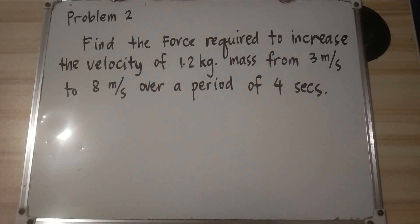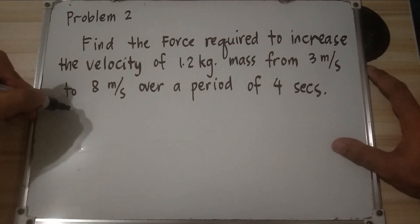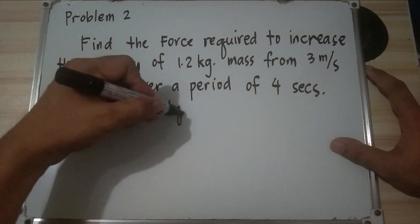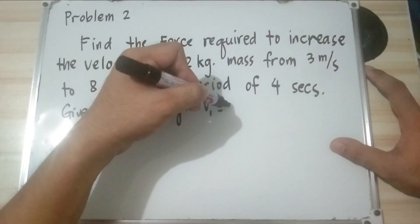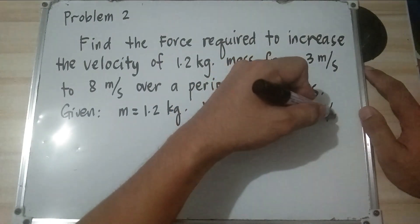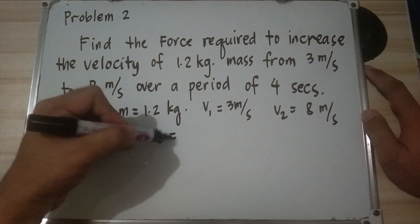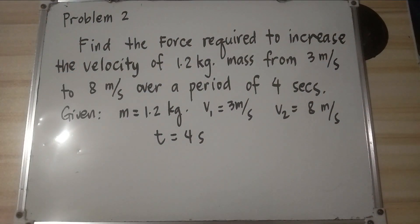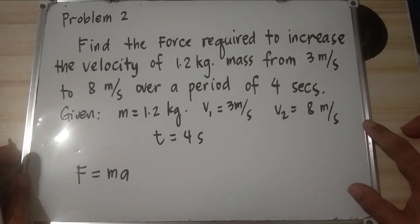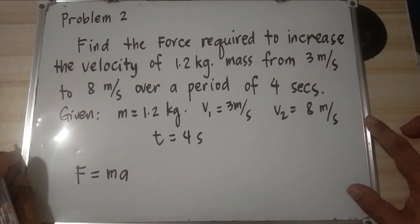Problem 2: Find the force required to increase the velocity of a 1.2-kilogram mass from 3 meters per second to 8 meters per second over a period of 4 seconds. Given: mass equals 1.2 kilograms, v_1 equals 3 meters per second, v_2 equals 8 meters per second, and time equals 4 seconds. Required is force. Force equals mass times acceleration, but we don't have the value of A — only v_1, v_2, and time.